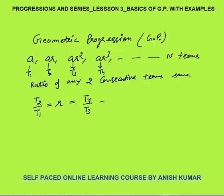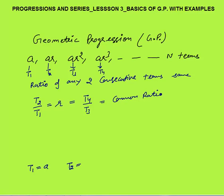This ratio R is called the common ratio. Now what will be the nth term of this geometric progression? We know that term 1 is A, term number 2 is A·R, term number 3 is AR². So by common sense, term number N will be A·R raised to the power N minus 1.